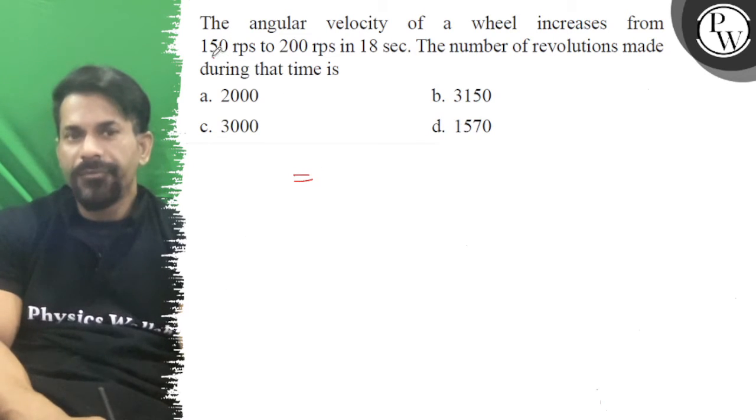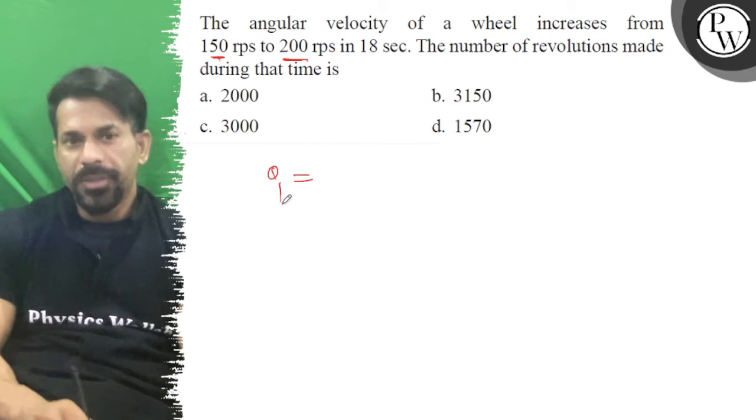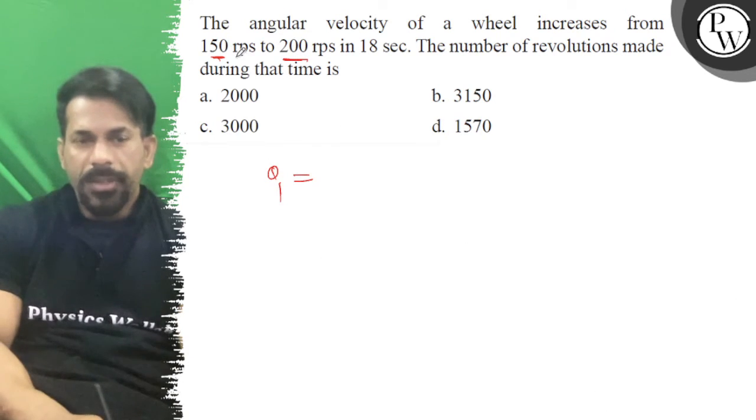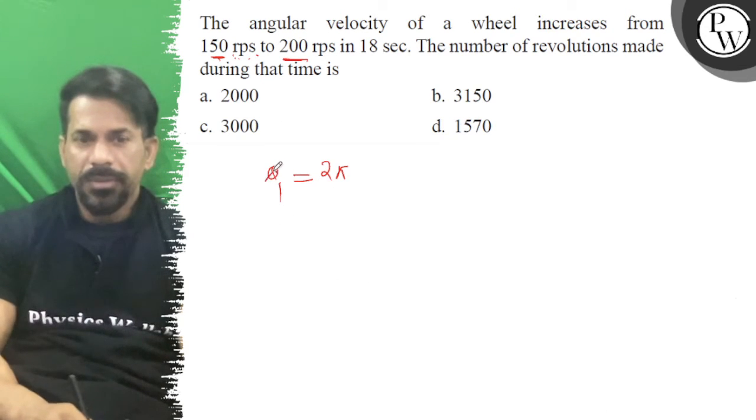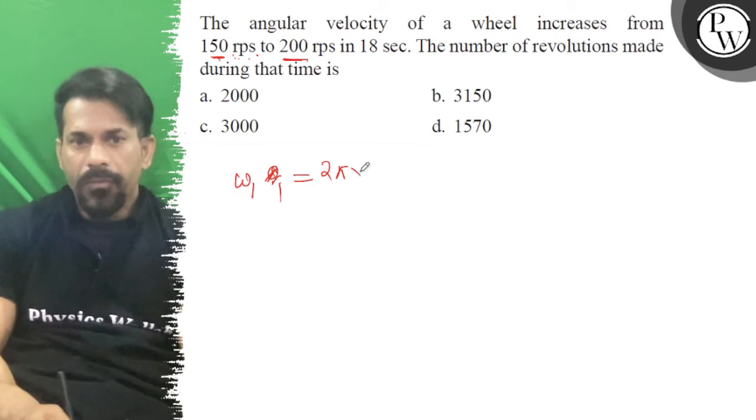So how did it increase? 150 rps to 200 rps. This is omega 1, this is omega 2. Omega initial is 2π into 150, and omega final is 2π into 200.